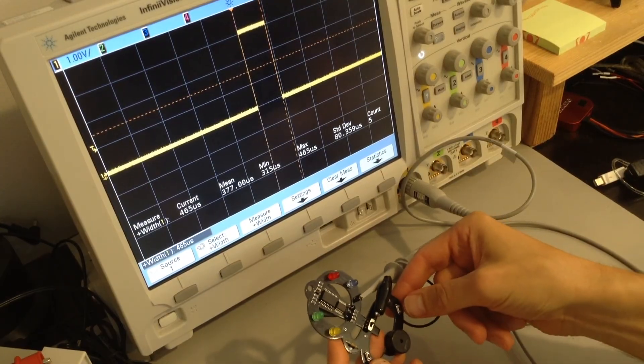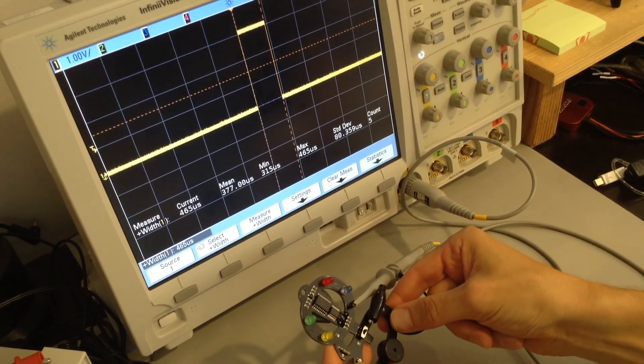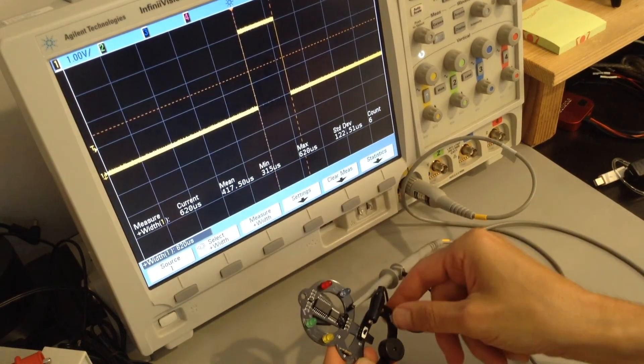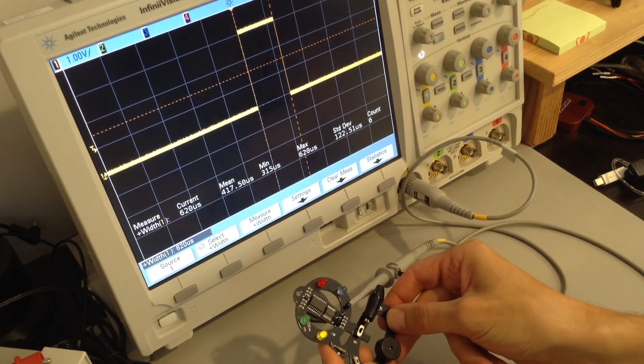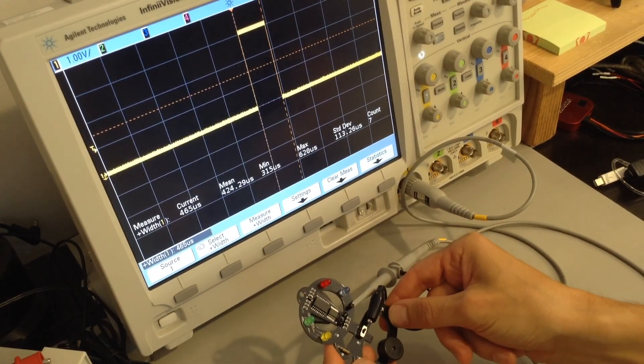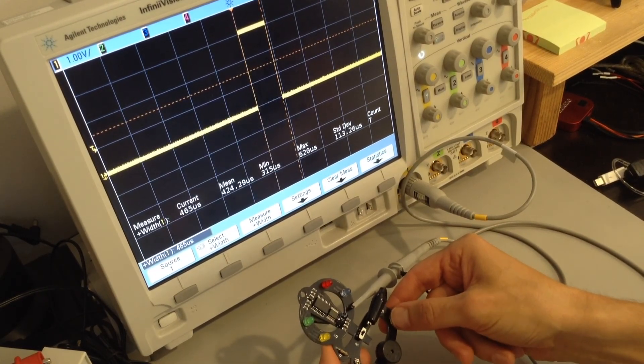So now let's try to figure out the second byte. So we're going to start with blue. Do blue, green, green, green. Now we're at 620 microseconds. Blue, yellow, yellow, yellow. 465. So we might have already guessed the second byte there, so let's just keep trying.